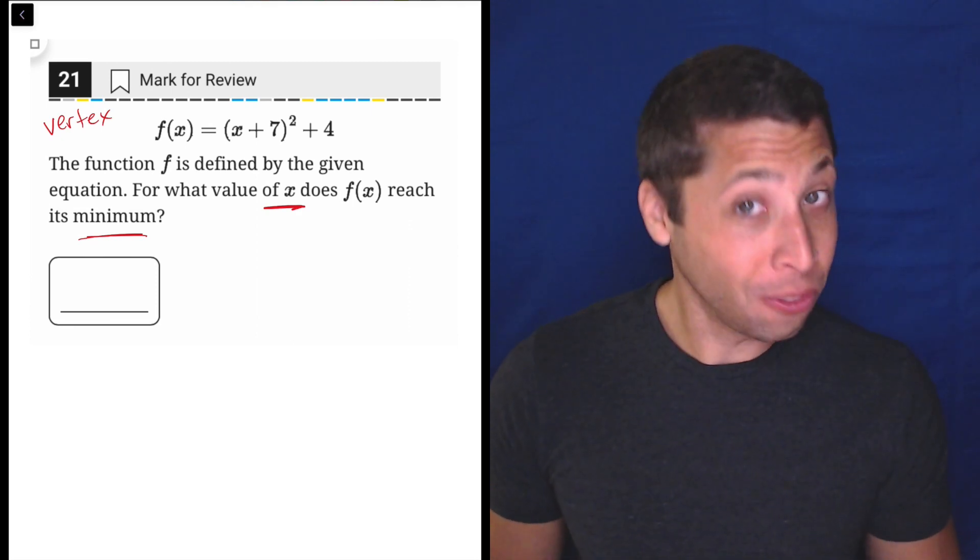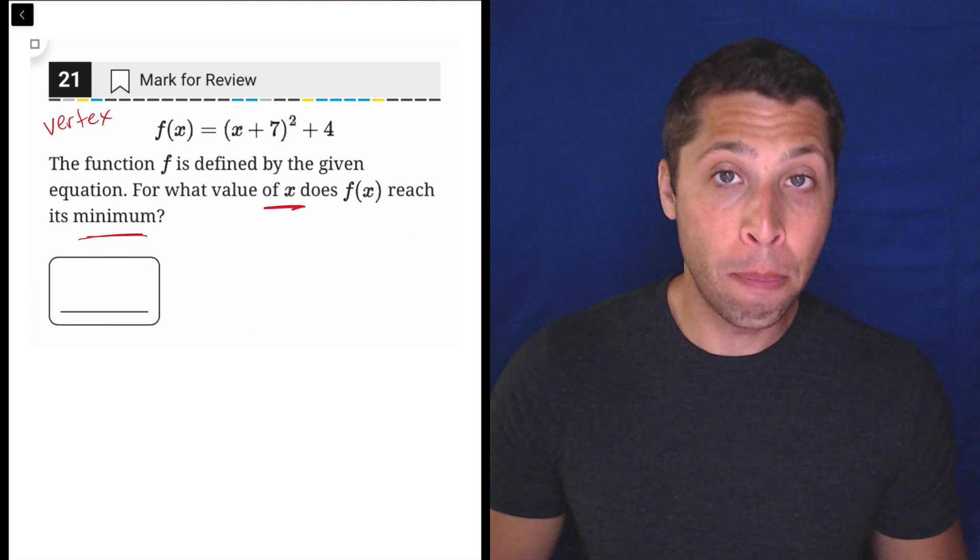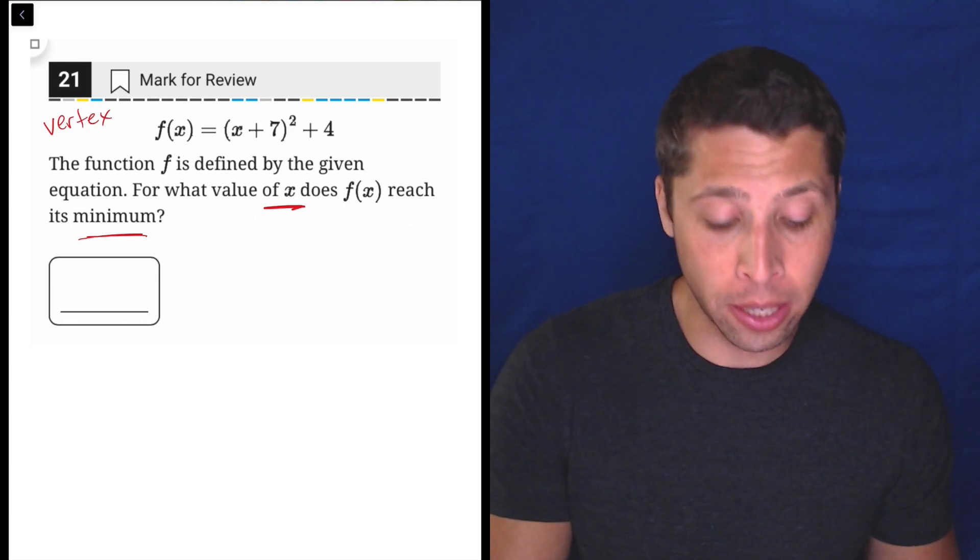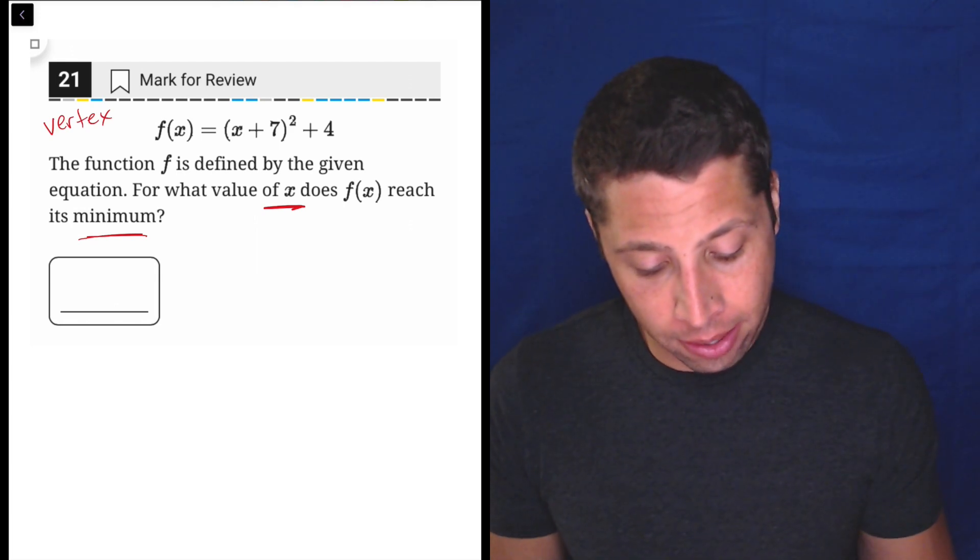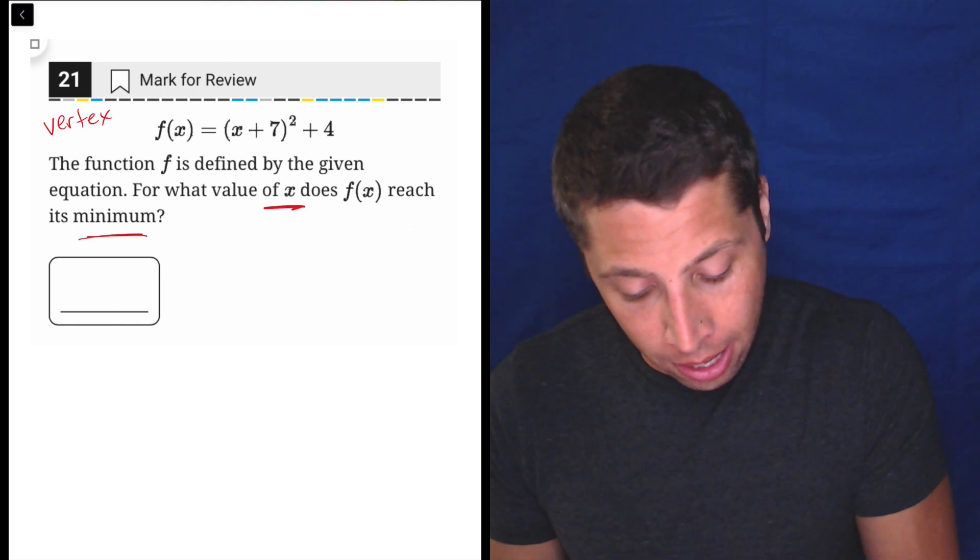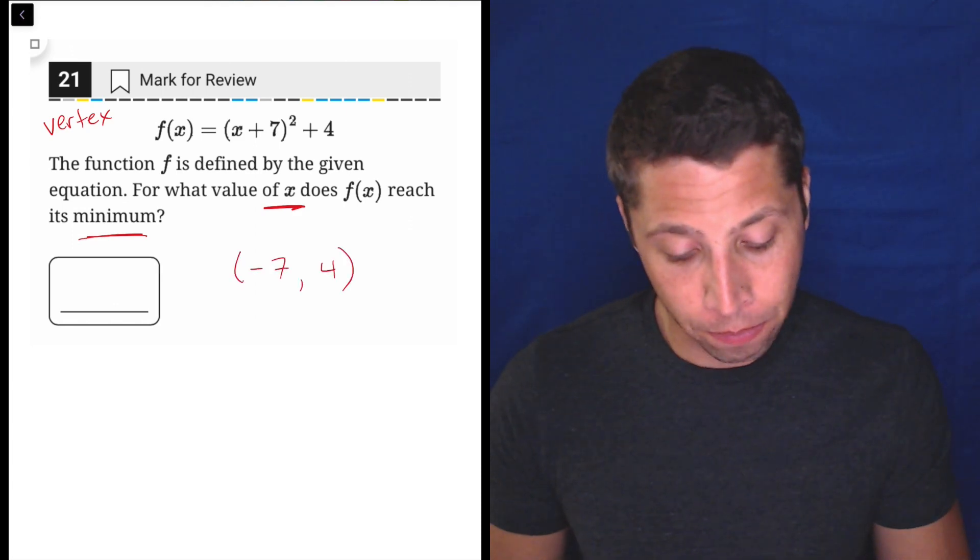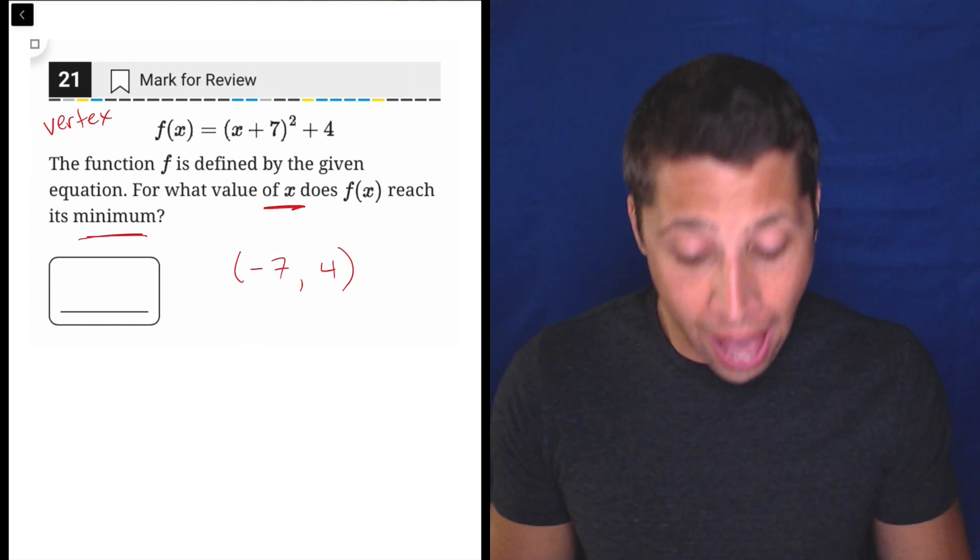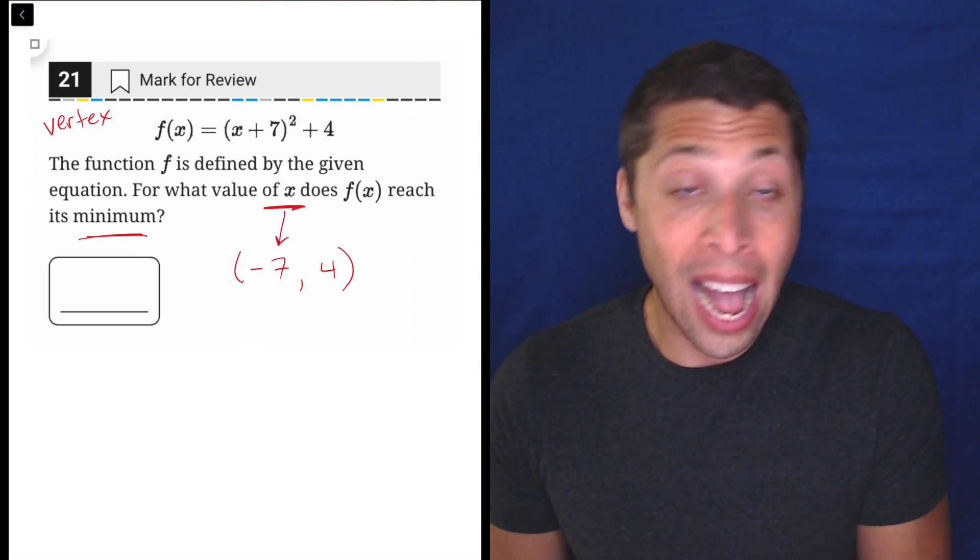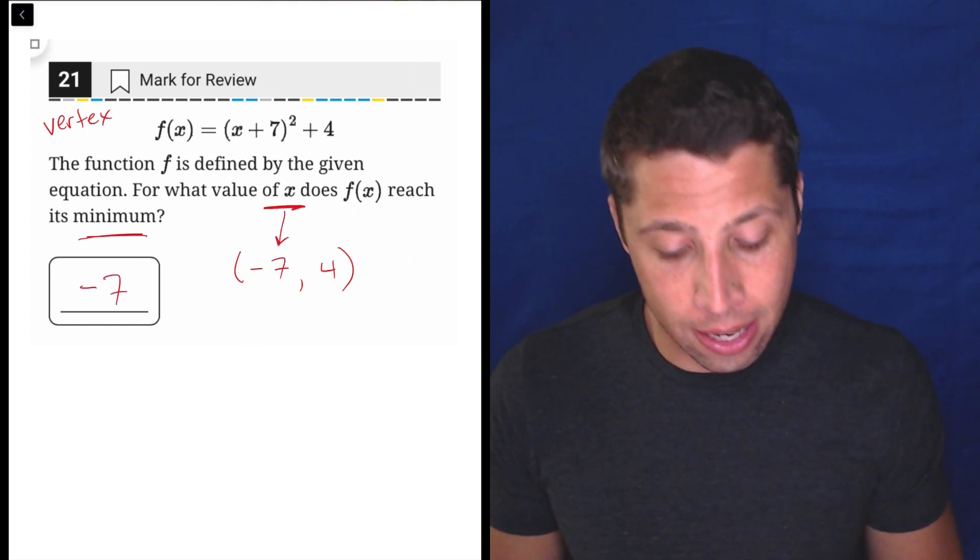But basically, we know how to read this form. We should know both the x and y coordinates of the vertex. In this case, the vertex is going to be negative seven, positive four. So when they say for what value of x does it reach its minimum, they're asking for the negative seven. So that is our answer.